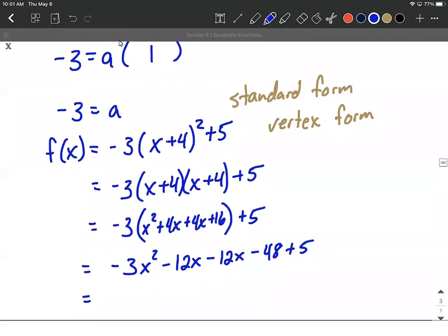Combine these like terms and we will be done. So -3x² - 24x - 43, and this is referred to as the general form.